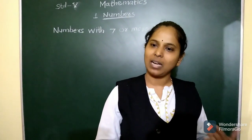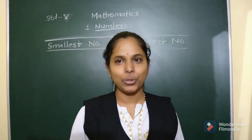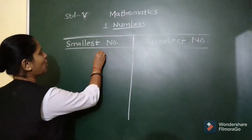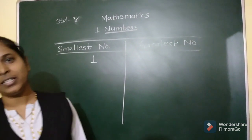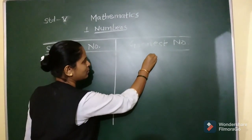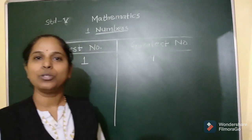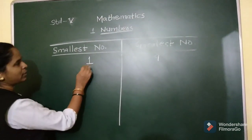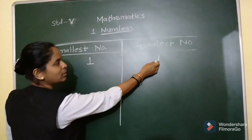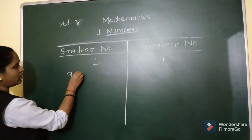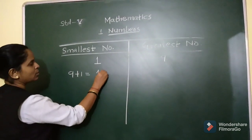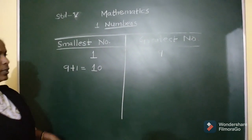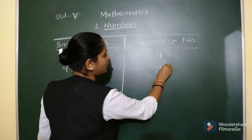Till this we had learned last year. Students, do you know which is the smallest one-digit number? Yes, the smallest one-digit number is 1 and the greatest single-digit number is 9. The smallest two-digit number is obtained by adding 1 to the greatest single-digit number: 9 plus 1 equals 10. So 10 is the smallest two-digit number, and the greatest two-digit number is 99.